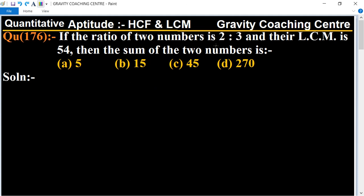So in this question, the ratio of the two numbers is given as 2:3 and LCM is also given as 54. So first of all we let the two numbers be 2x and 3x.